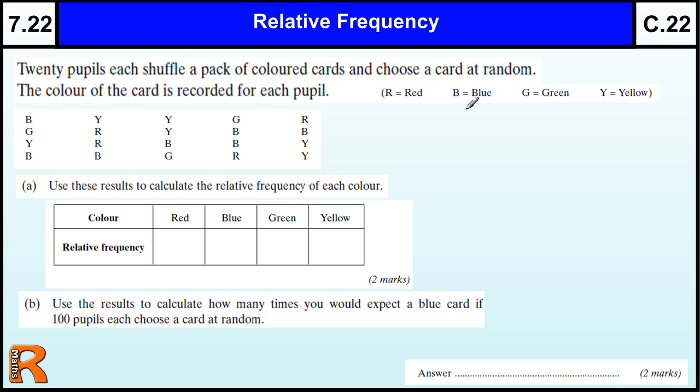So, I'm going to do a tally chart. Blue, yellow, yellow, green, red. Green, red, yellow, blue, blue. Blue, blue, green, red, yellow.